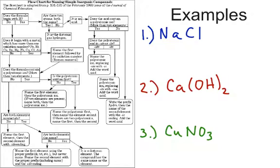So, the first one, we see NaCl. The first question that I'm going to follow, does the formula begin with hydrogen? Well, you can see that it begins with sodium, not hydrogen, so the answer is no. So, we're going to go this direction. Does it begin with a metal which has more than one oxidation number?